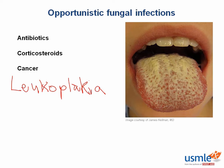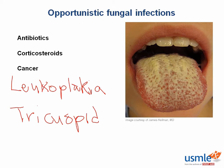IV drug users can also be affected by Candida endocarditis. The tricuspid valve is more likely to be affected in endocarditis in IV drug users. Pseudomonas is the gram-negative bacteria we discussed that can cause endocarditis in these patients, though bear in mind that Staph aureus is actually the most common cause of acute endocarditis.